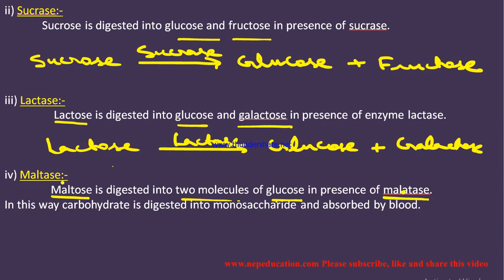In this way, carbohydrate is digested into monosaccharides and absorbed by the blood. This is the complete answer to the question: explain the digestion of carbohydrates in the human digestive tract.